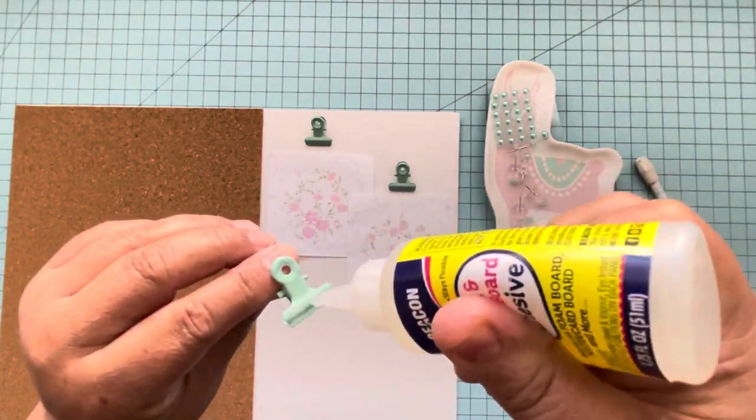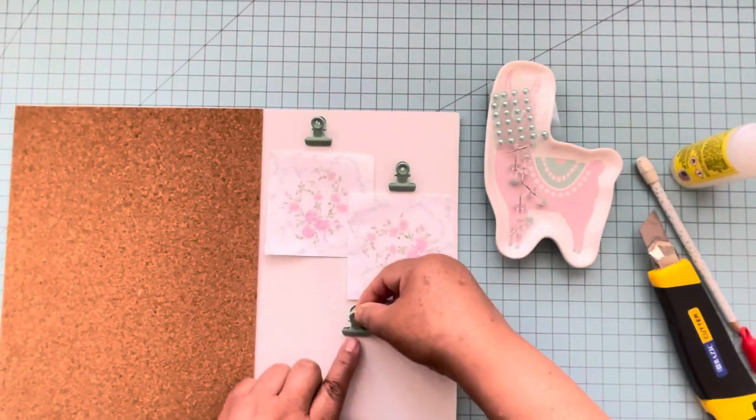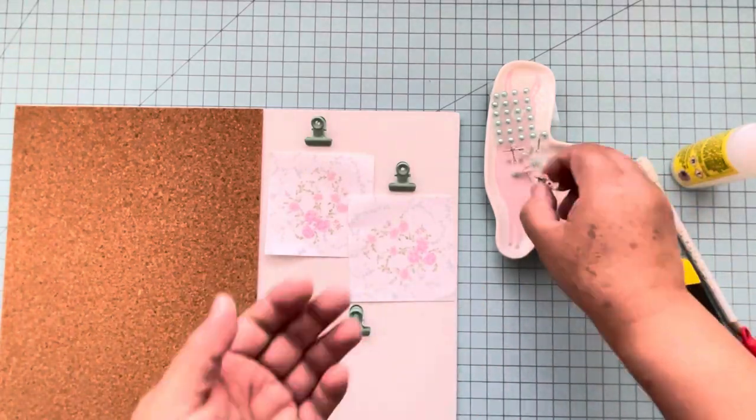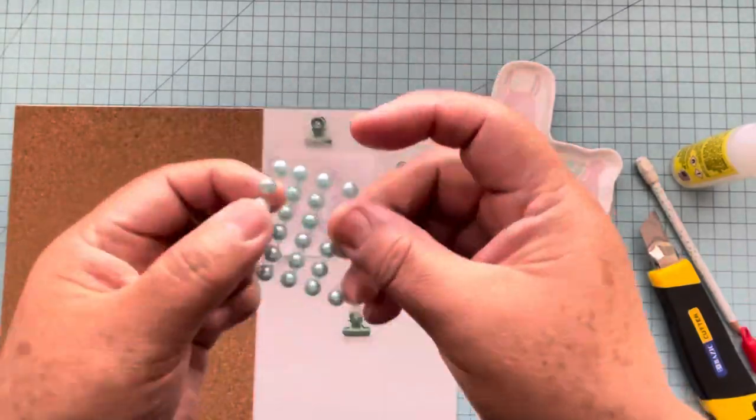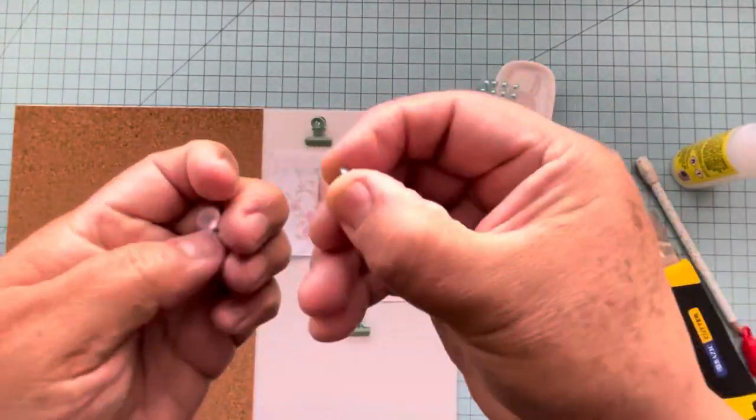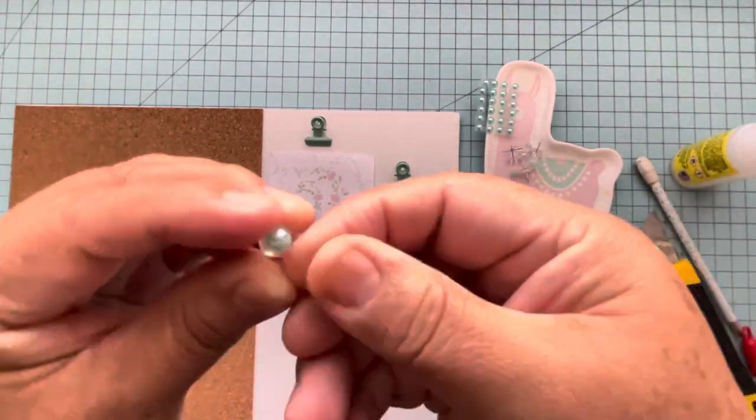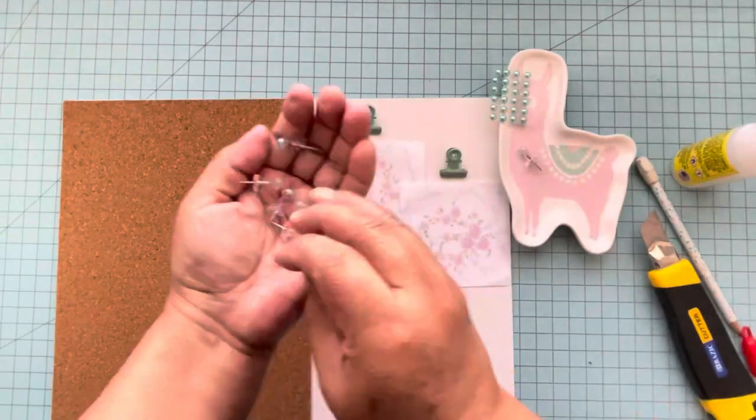Now I'm going to embellish these push pins that I bought at Dollar Tree with these flat back pearls that you can find there too in different colors. I'm going to put one on top so it can coordinate the color of my craft room. Now I have the push pins ready, and I'm going to put them on the cork board.